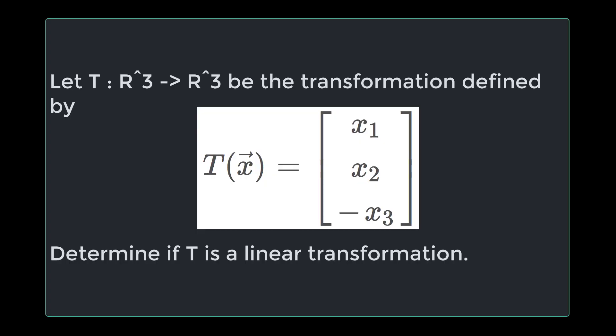The question we're working on today is, let T from R3 to R3 be the transformation defined by T of X equals X1, X2, minus X3. Determine if T is a linear transformation.